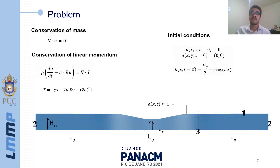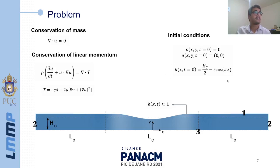The boundaries of our domain are marked according to this figure. The conservation of mass is imposed by the continuity equation, and the conservation of linear momentum is imposed by the Navier-Stokes equations. The initial conditions for the velocity and pressure fields are null, and the initial shape of the interface is given by H of X, where Hc represents the undisturbed film thickness, epsilon is the perturbation amplitude, and Lc is the perturbation wavelength.